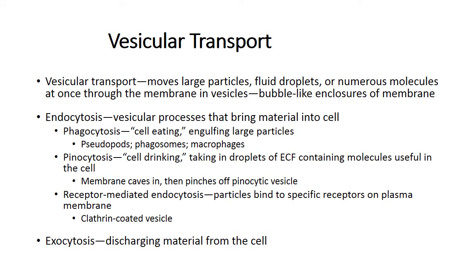Vesicular transport includes endocytosis, which means something is entering the cell — whether a large particle, fluid, or any type of molecule. There are three categories of endocytosis: phagocytosis, pinocytosis, and receptor-mediated endocytosis. Phagocytosis means 'cell eating' — white blood cells like neutrophils and macrophages use pseudopods to capture and engulf bacteria.